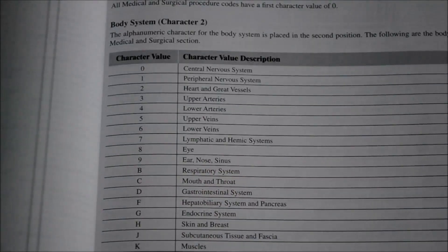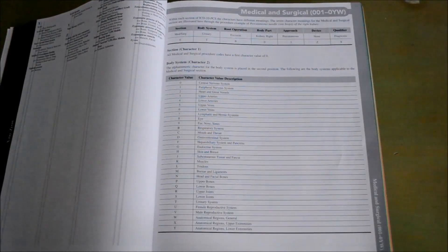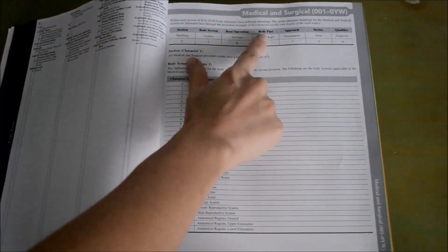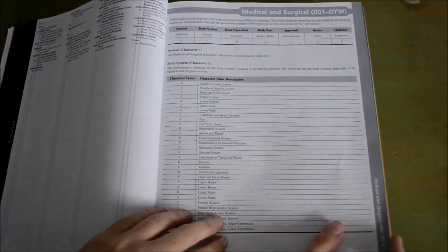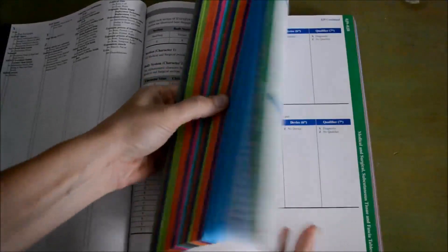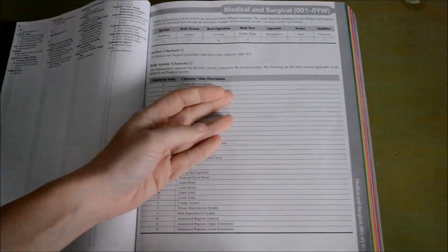The first section of the code book is Medical and Surgical. The first page of every section tells you what each character of the code means: section, body system, root operation, body part, approach, device, and qualifier. It also lists all the different chapters — the different body systems. What's really great is that once you get into it, the book is color coded, making it very easy to jump around, and you'll start to remember which body system corresponds to which color.